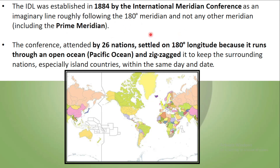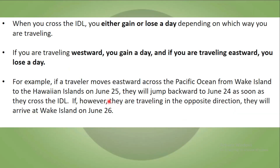The International Date Line was established in 1884 by the International Meridian Conference as an imaginary line roughly following the 180-degree meridian, and not any other meridian including the Prime Meridian. The conference was attended by 26 nations. They settled on the 180-degree longitude because it runs through the open ocean — the Pacific Ocean — and it was made zigzag to keep surrounding nations, especially island countries, within the same day and date.